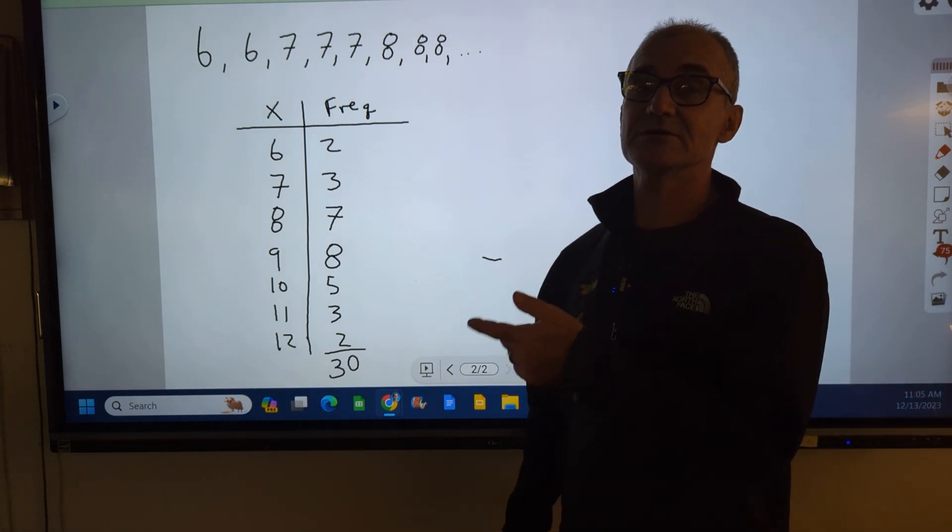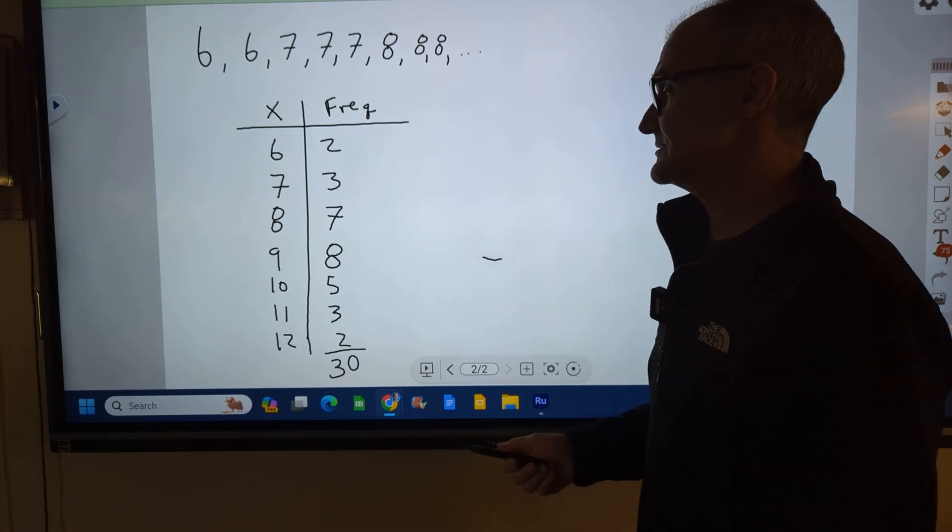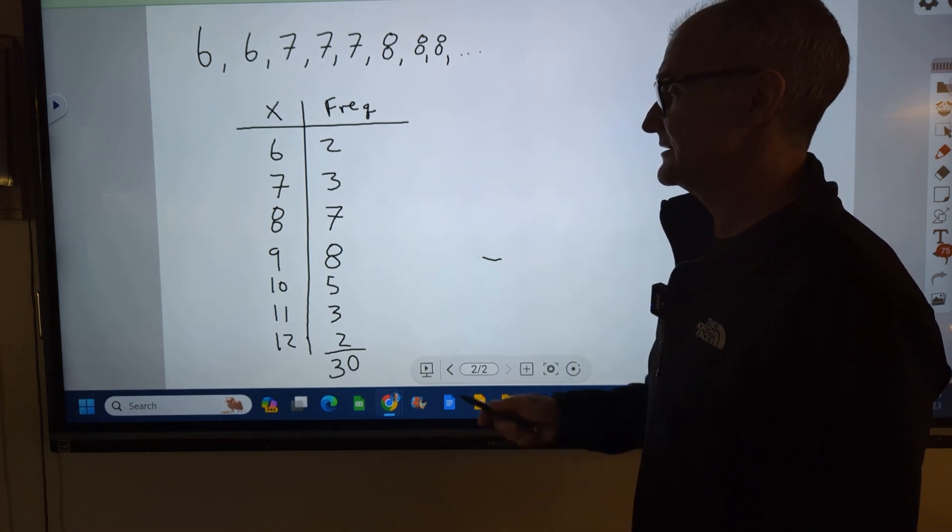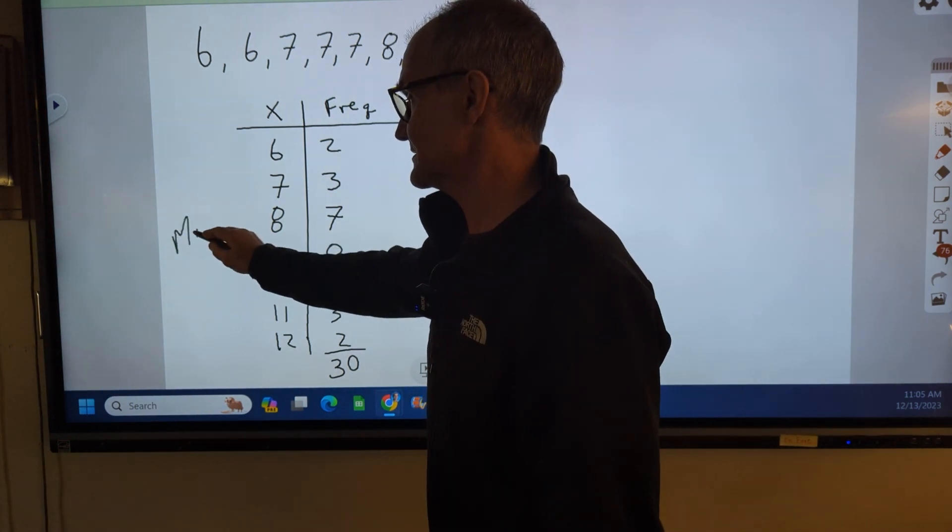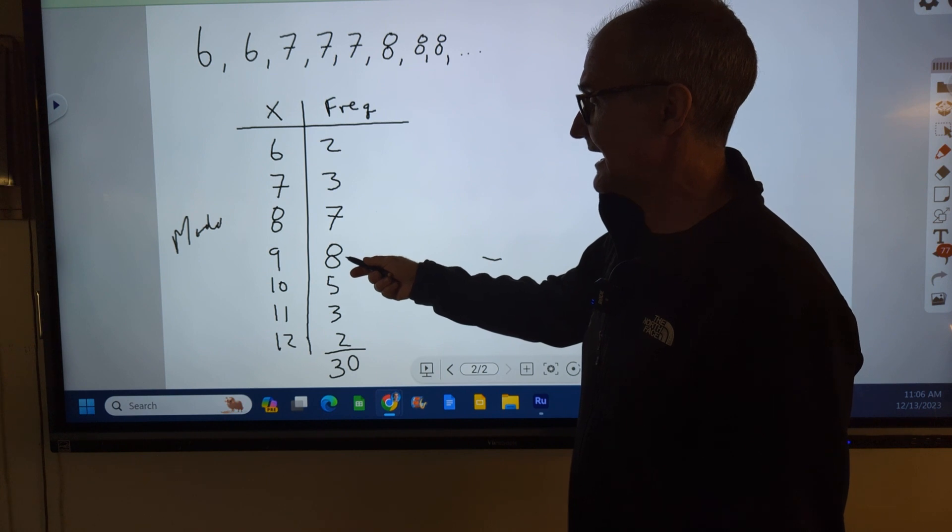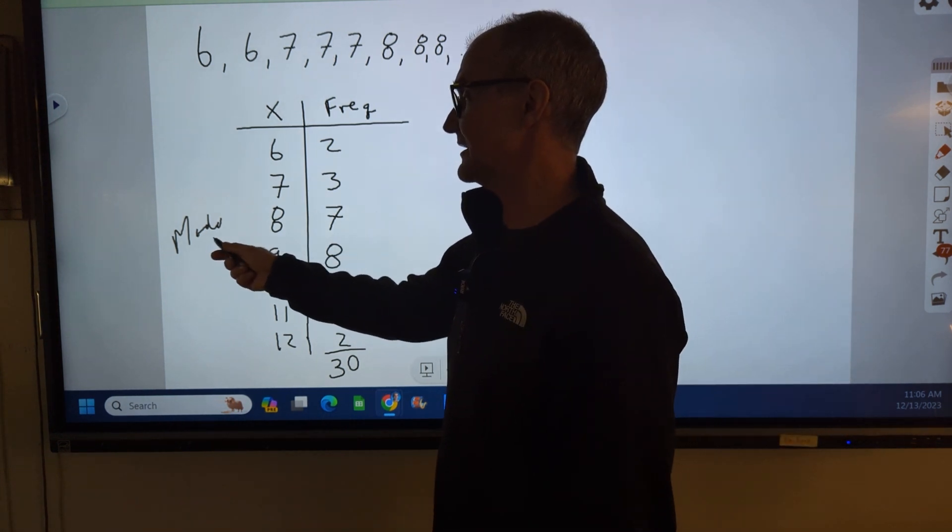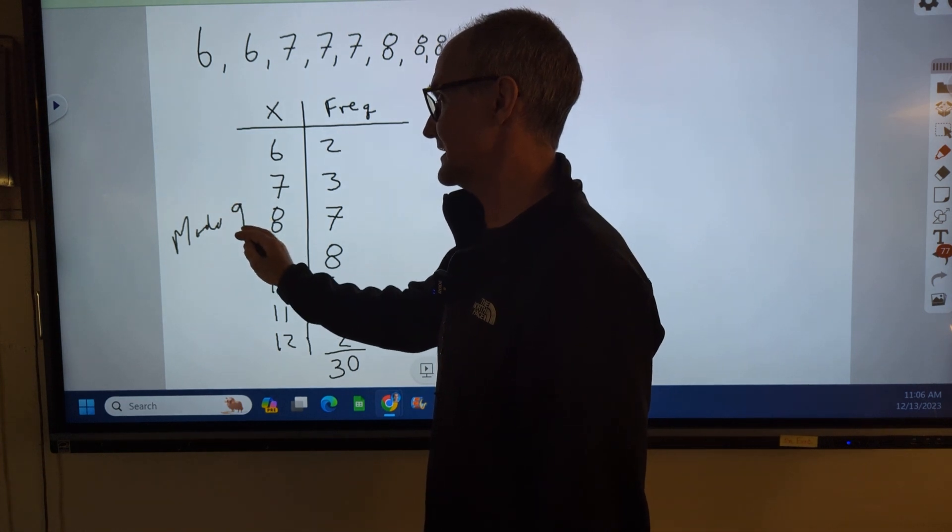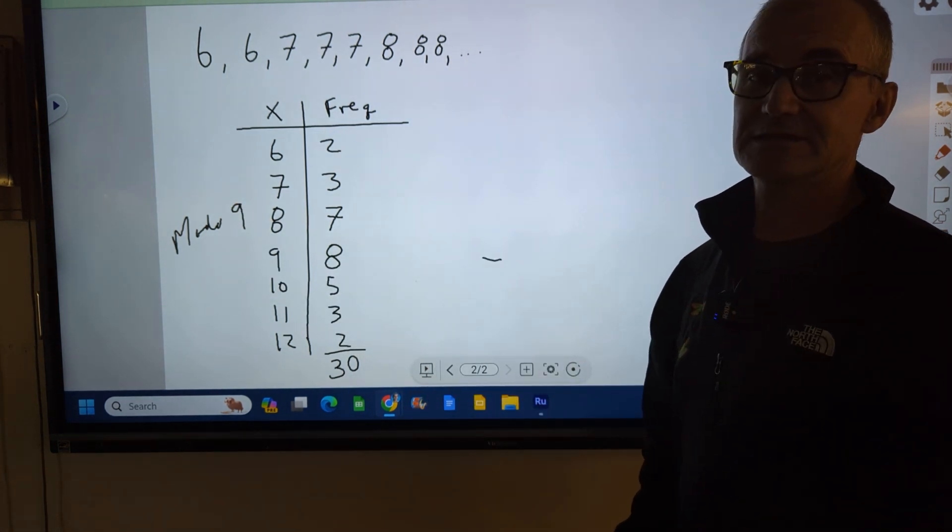We're going to find the mean, median, mode for this set of data as well. So the mode is going to be the easiest to find. The mode is the one that appears most frequently. So the mode is going to be, I have 8 values of 9. So the most frequent value, the mode, is 9. Really easy to do that on a frequency distribution.